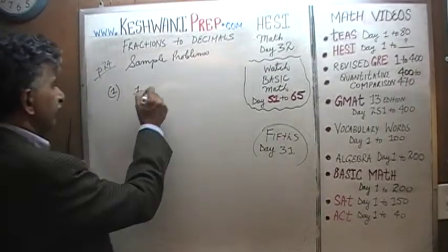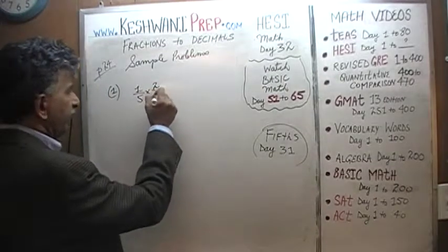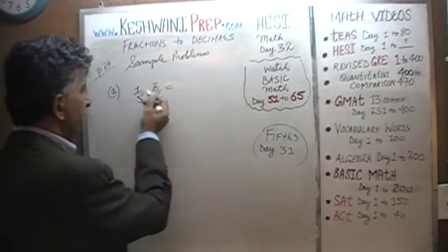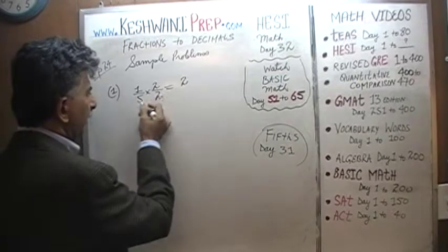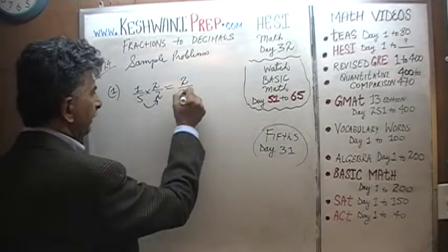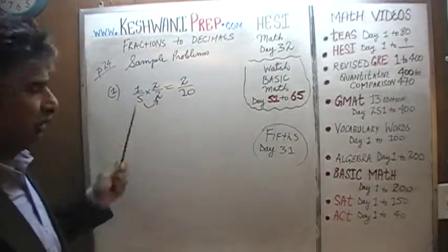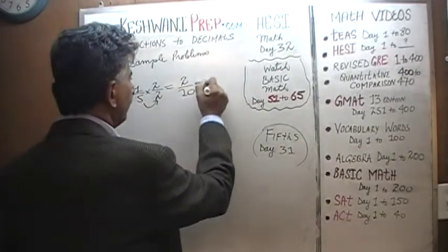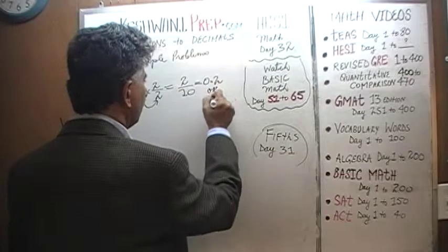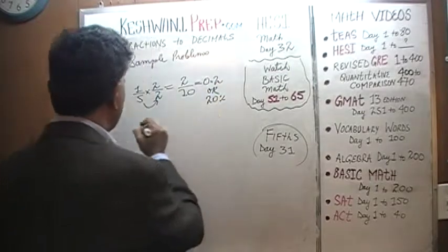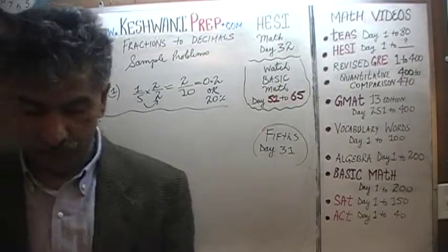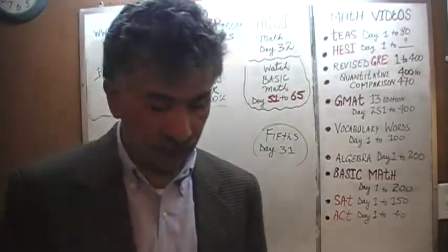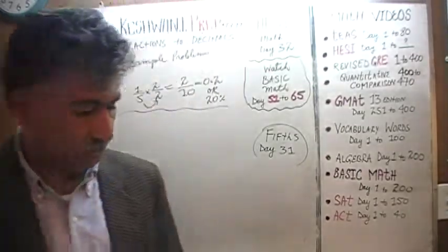One-fifth is simply, take the one-fifth, divide top and bottom by two, so that we convert it into a tenth, because tenths are very easy to deal with. One-fifth is same as one times two is two, and five times two is ten. One-fifth is same as two tenths, because if you reduce two tenths, you get one-fifth. And two tenths, we can immediately see, is same as 0.2. Or if you want it in percentages, twenty percent. One-fifth is twenty percent, therefore two-fifths will be forty percent, three-fifths will be sixty percent, four-fifths will be eighty percent, and so on and so forth. Oh, that's the next one.